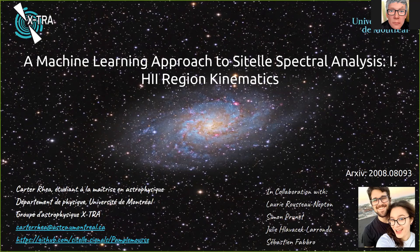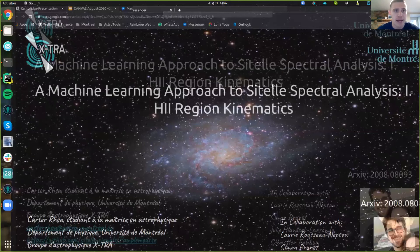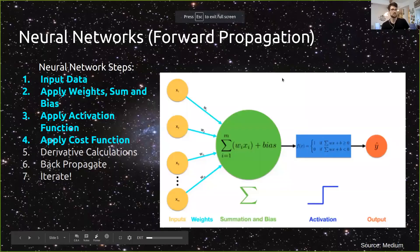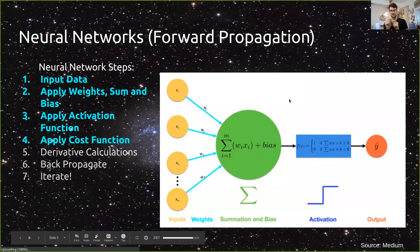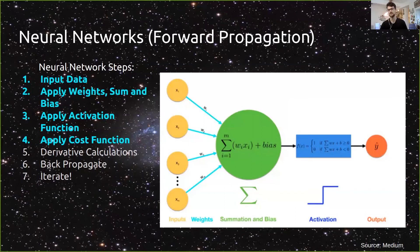Blake asks: when you talked about the neural network step of including weights plus or minus some bias, what would be a real observational bias you could include at that step? The bias is normally just a numerical artifact added to shift the node value. Incorporating real physical systematics into neural network nodes isn't common yet, but it's expected to happen as machine learning in astronomy matures. For now, the best approach is to handle systematics in the pre-processing of the training set.